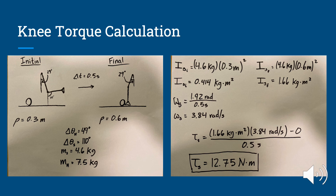Now we're going to look at the knee torque calculation based on the same sketch. We calculated inertia using the shank mass and shank radius of gyration squared, solving for both initial and final values. Then we found angular velocity using the difference in shank angles of 110 degrees, converted to 1.92 radians, giving an angular velocity of 3.84 radians per second. Using the same torque calculation, we found the torque of the shank is about 12.75 newton meters. This confirms what the literature shows, because our hip torque is much greater than the knee torque.